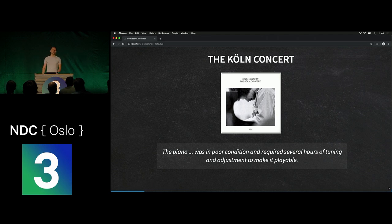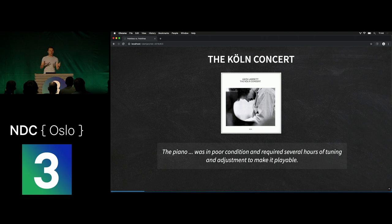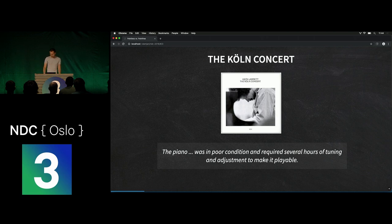A German lady who was the concert organizer managed to convince him to perform. The problem was that only the middle register of the piano was working correctly — the highs were non-existent and the lows were very weak. He could only play with half the piano, which is a massive limitation. But this became the most sold piano concert record and the most sold jazz album in the history of music, because he had to improvise in a way that hid the deficiency of the instrument.